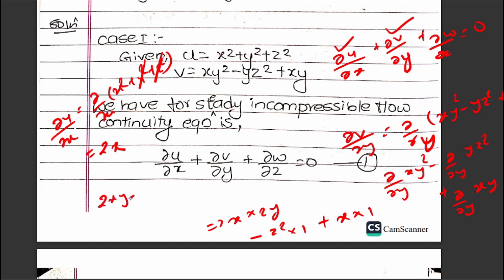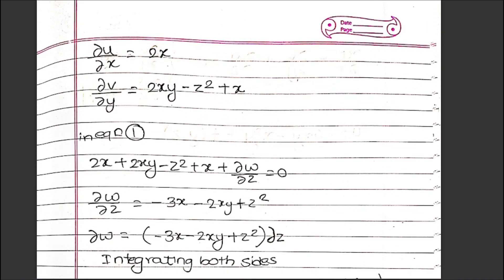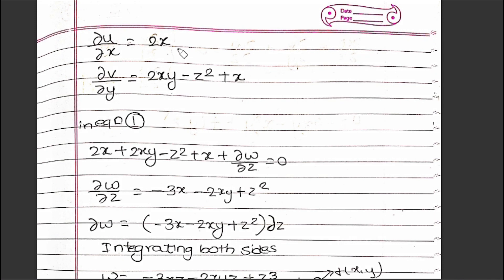Substituting into the continuity equation: 2x + 2xy - 2yz + x + ∂w/∂z = 0. Therefore ∂w/∂z = -3x - 2xy + 2yz.